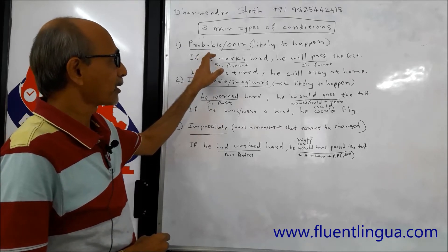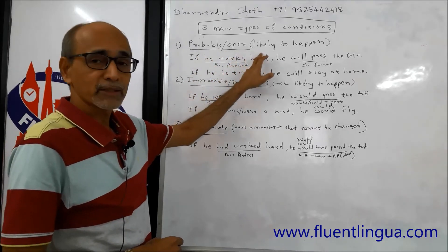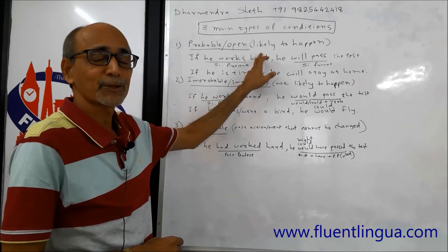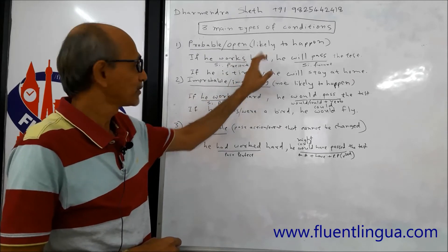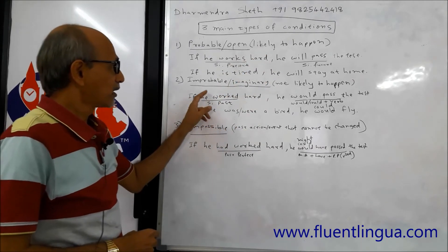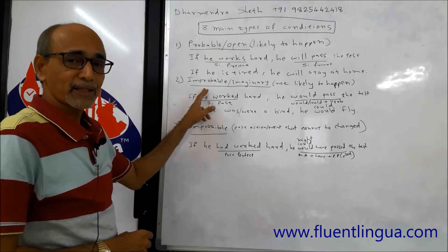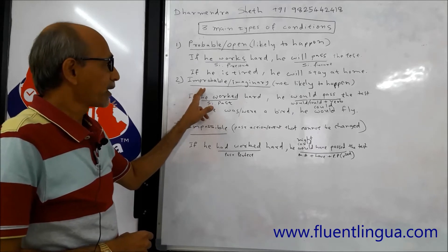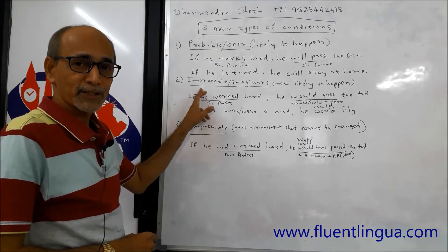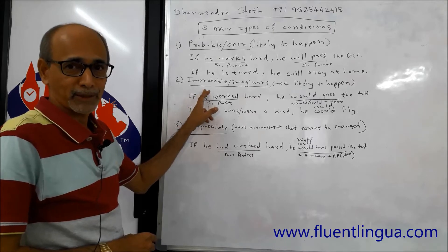So the first type is Probable or Open condition — likely to happen. Now let's talk about the second type of condition, which we call Improbable.